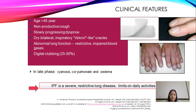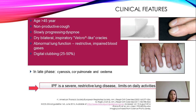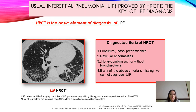Clinical features of IPF: age more than 45 years, non-productive cough, slowly progressive dyspnea, dry bilateral inspiratory Velcro-like crackles, abnormal lung function, and digital clubbing. In later phases you may see cyanosis, cor pulmonale, and leg edema. IPF is a severe restrictive lung disease that limits daily activities.